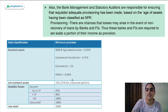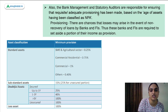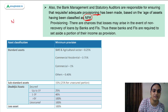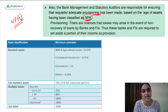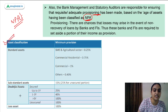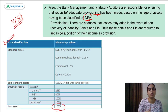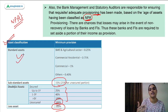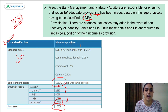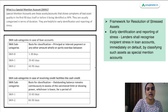Bank management and statutory auditors are responsible for ensuring proper provisioning against these NPAs. Against each NPA category, you have to keep certain provisions — set aside a certain portion of income to deal with such losses. For loss assets, 100% provision should be created. For doubtful assets, for unsecured portions it's 100%, and for the remaining portions different rates are specified based on time period. For substandard assets it ranges between 15 to 25%, and standard assets which are not yet classified as NPA also have different minimum provisions to be set aside.